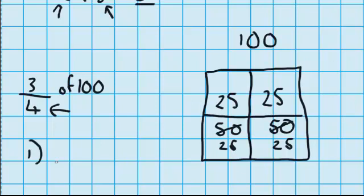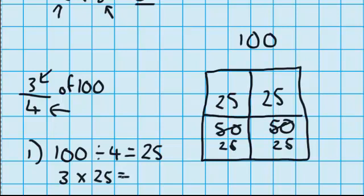So we've done step 1. We've done 100 shared into 4 quarters means there are 25 squares in each quarter. But remember I'm not just interested in 1 quarter. My numerator tells me I'm interested in 3. So 3 lots of 25 equals 75.